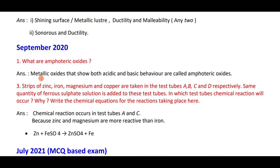Strips of zinc, iron, magnesium, and copper are taken in test tubes A, B, C, D. The same quantity of ferrous sulfate solution is added. Chemical reactions will take place in test tubes A and C because zinc and magnesium are more reactive than iron. You must know the reactivity series.